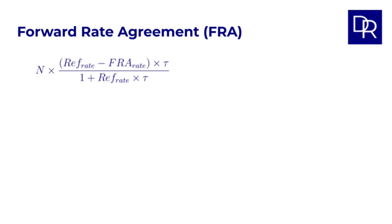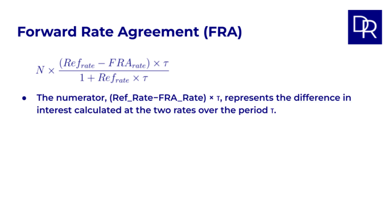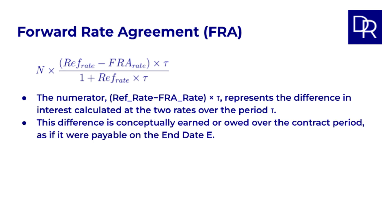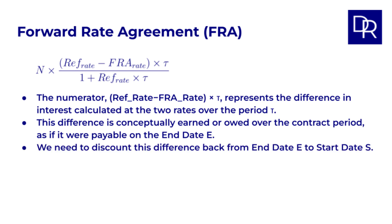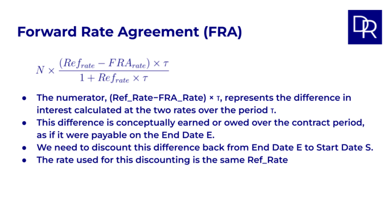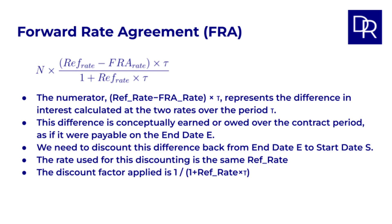Let's look at the logic of the formula. The numerator — REF rate minus FRA rate, times tau — represents the difference in interest calculated at the two rates over the period. This difference is conceptually earned or owed over the contract period, as if it were payable on the end date. However, since the settlement happens on the start date, which is before the contract period begins, we need to discount this conceptual difference back from the end date to the start date. The rate used for this discounting is the same REF rate — the market rate for the period observed on the settlement date. The discount factor applied is 1 over (1 plus the REF rate times tau).